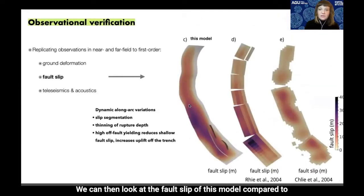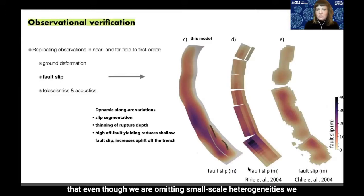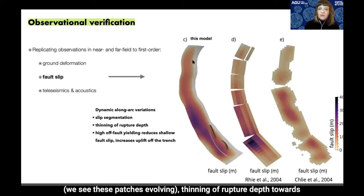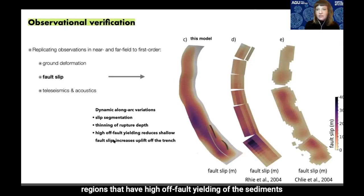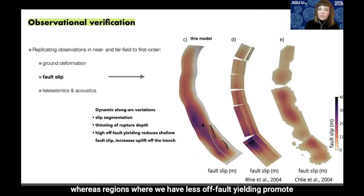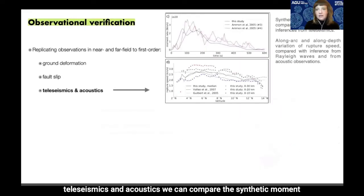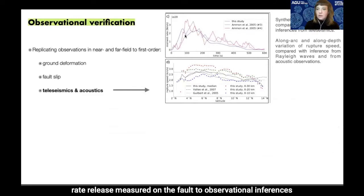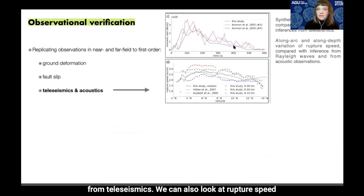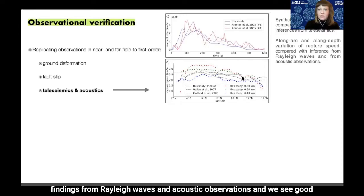Looking at fault slip compared to kinematically inferred fault slip, we see that even omitting small-scale heterogeneities, we observe dynamic along-arc variations in slip segmentation, with patches thinning at rupture depth towards the north. Regions with high off-fault yielding of sediments reduce shallow fault slip and increase trench uplift, while regions with less off-fault yielding promote slip all the way to the trench. Comparing synthetic moment rate release to observational inferences from teleseismic data, and rupture speed in the model to observational findings from teleseismics and acoustic observations, we also see good agreement.